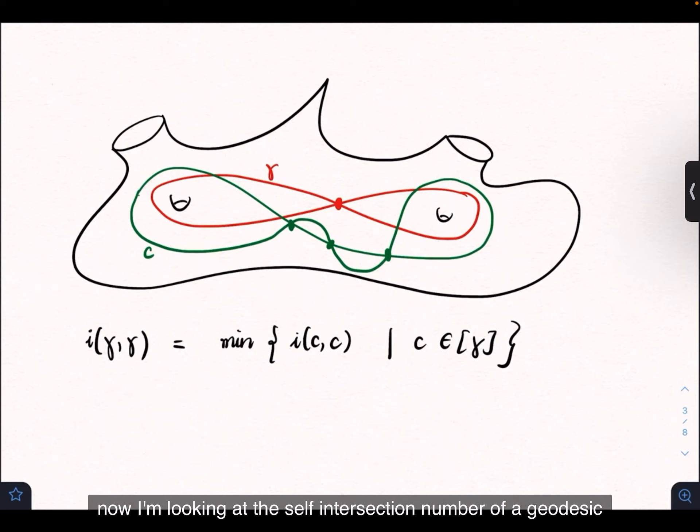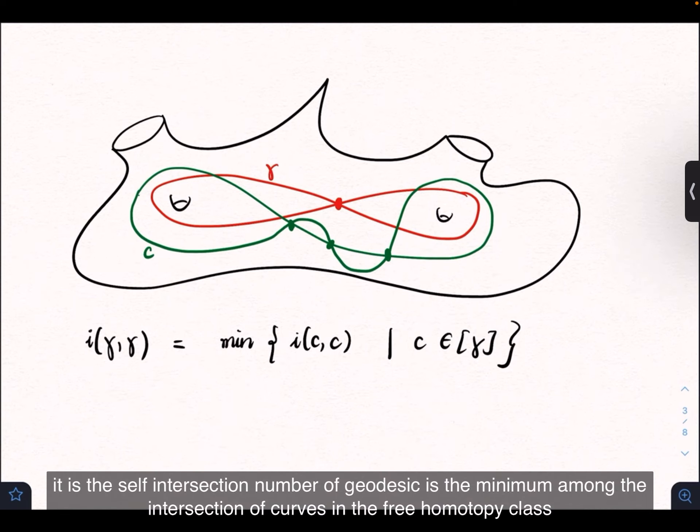Now I'm looking at the self-intersection number of a geodesic. The self-intersection number of a geodesic is the minimum among the intersection numbers of curves in the free-homotopic class.